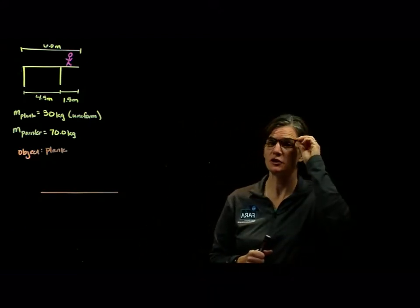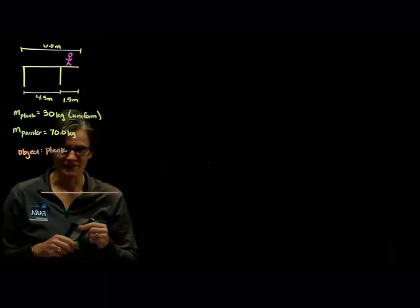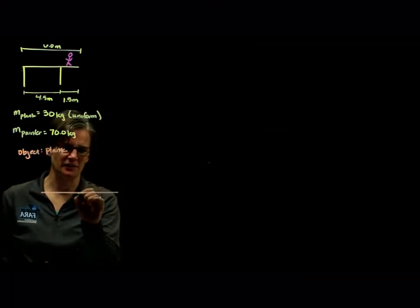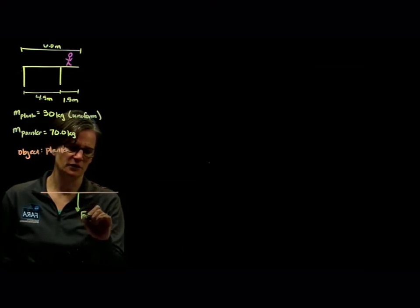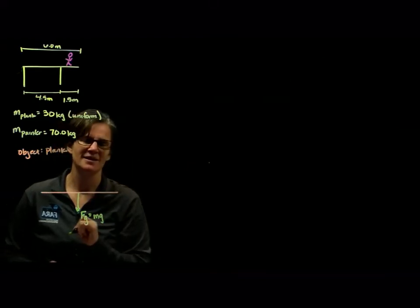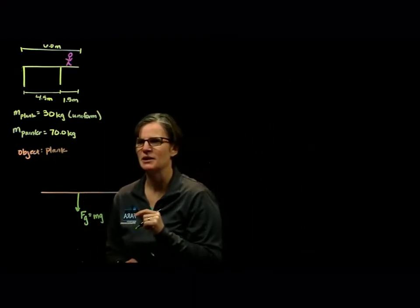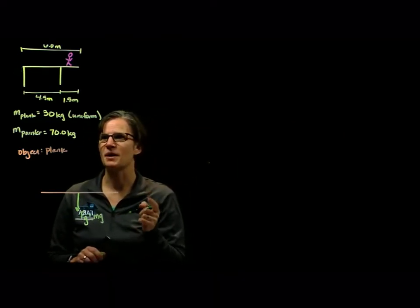We're told it's a uniformly distributed board, therefore the force of gravity is acting at the geometric center. So here's our force of gravity of the plank, which we know is equal to m times g. We're not given the weight in this problem, so we're going to have to determine it based on the mass. That's in the geometric center.